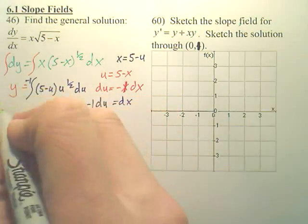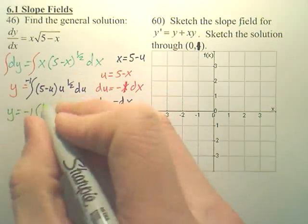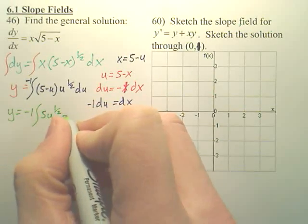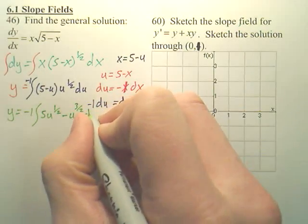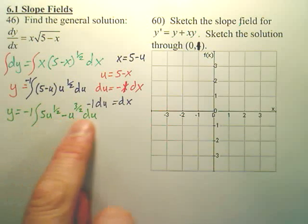And the negative 1 goes out front with the du. This is u to the 1/2 and isn't x 5 minus u. Now we can integrate. Before we integrate this, let's multiply this out, 5u to the 1/2 minus u to the 3/2. Can we integrate each piece individually now? Yes, you can integrate each of these individually.